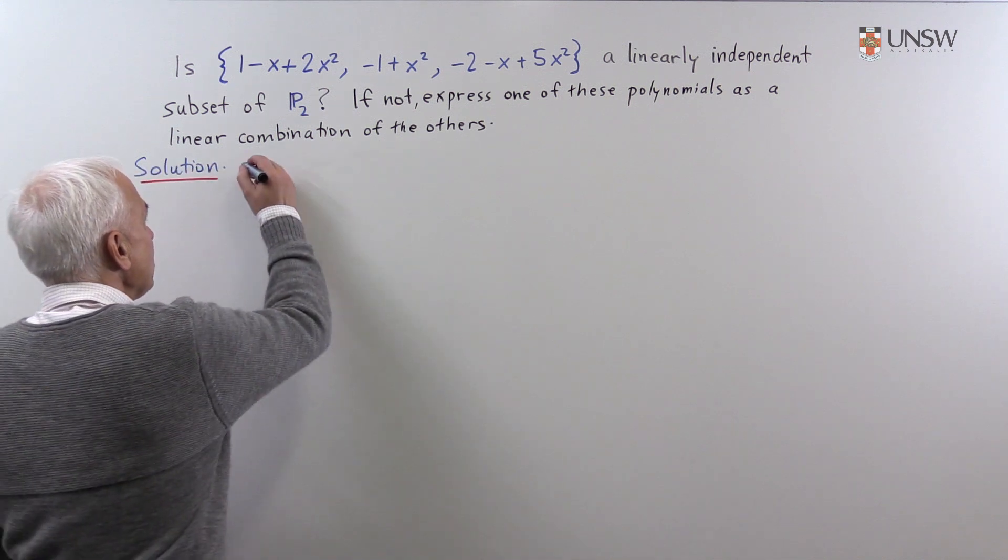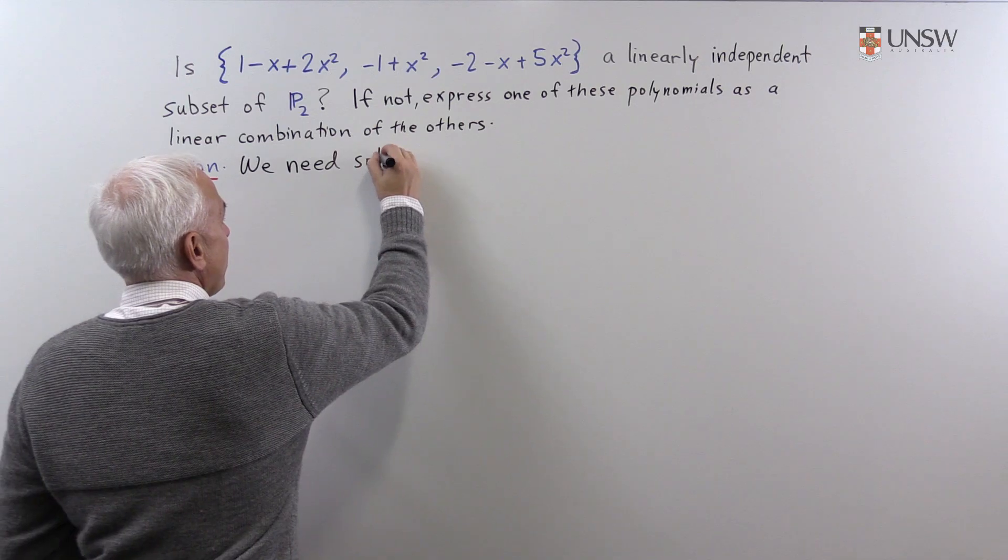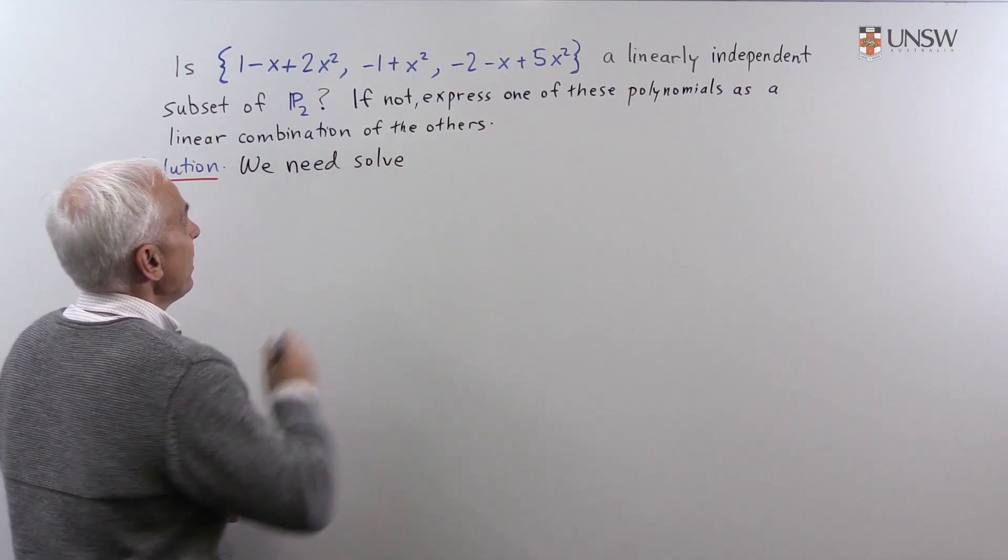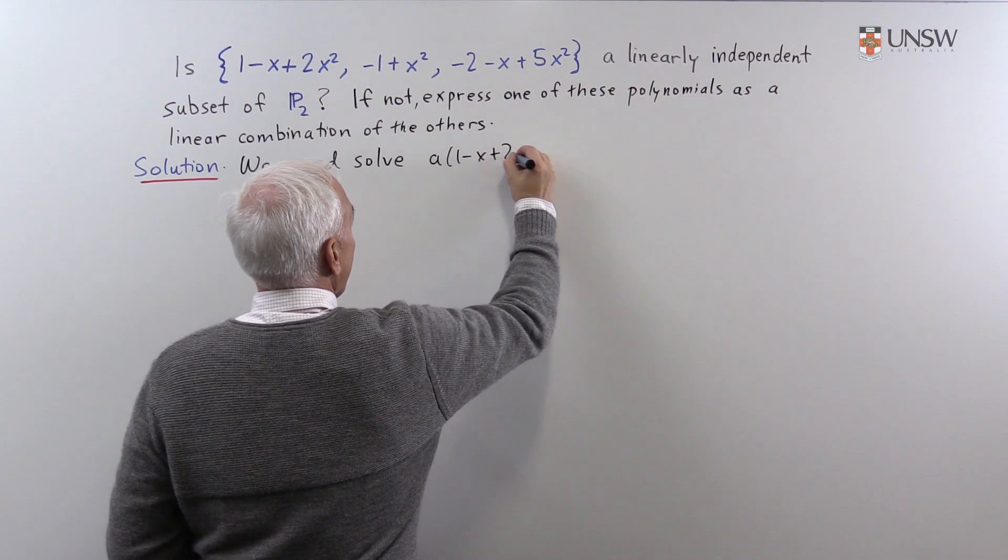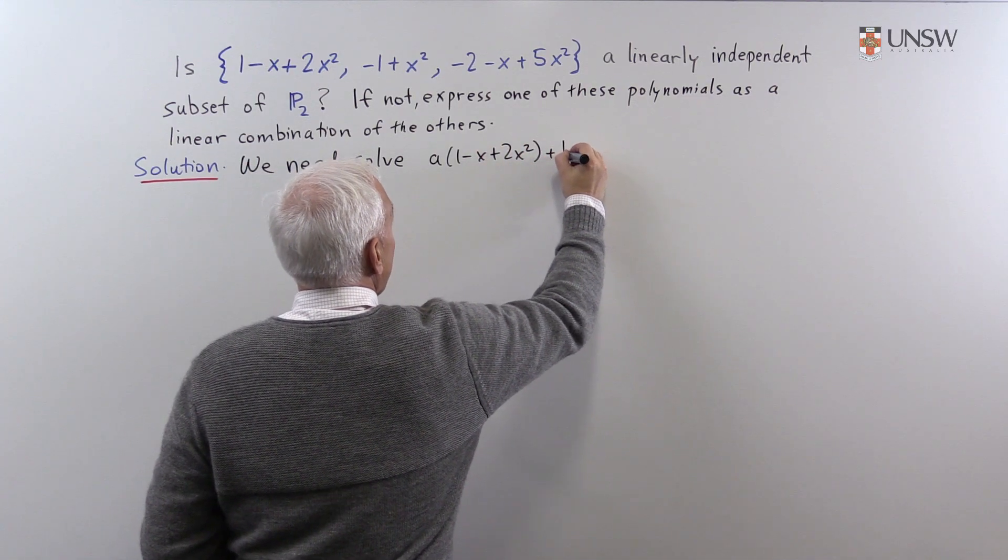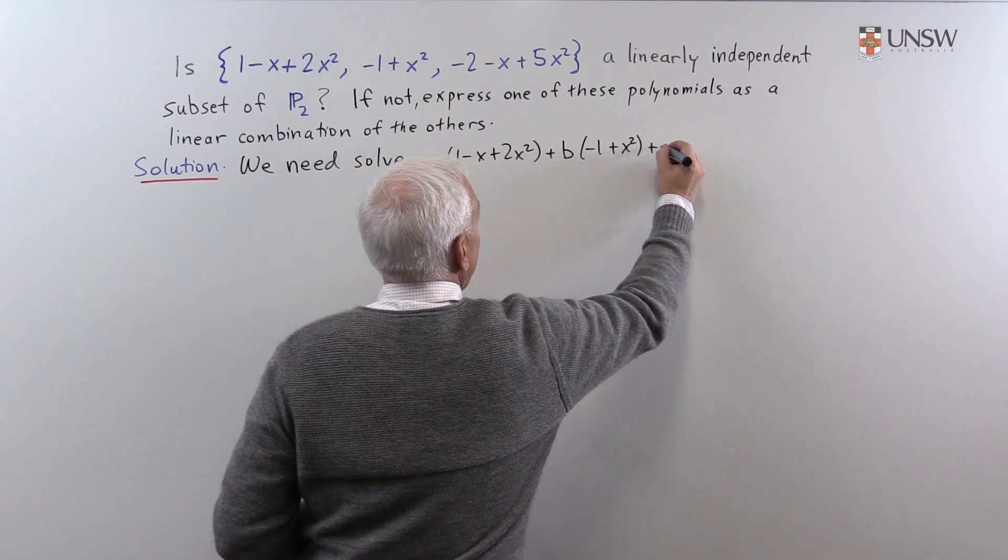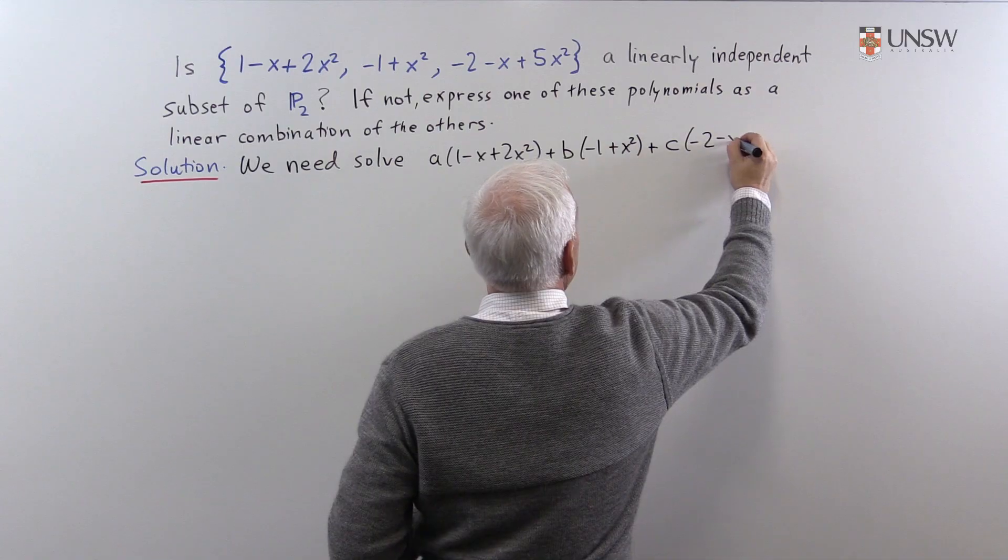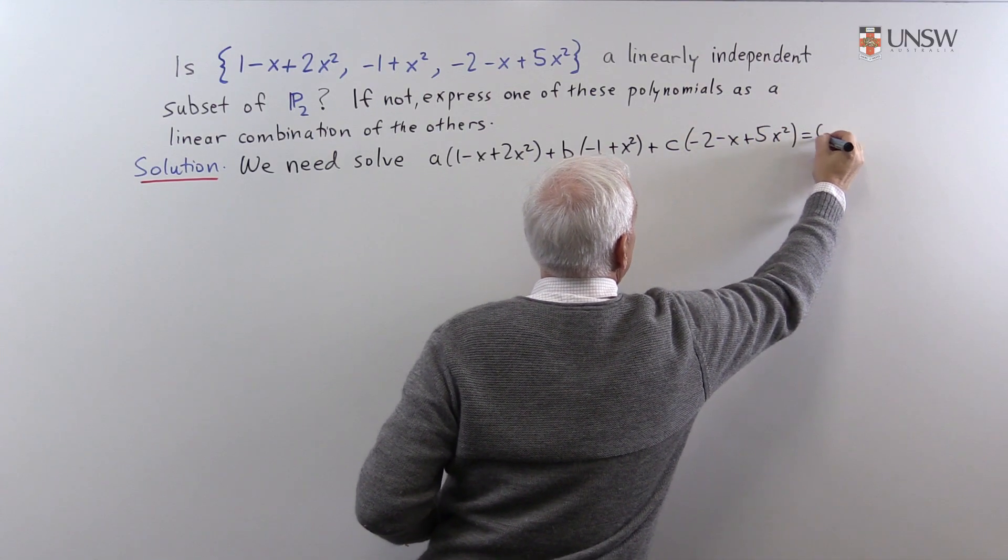So we need to solve the equation that says a times (1 - x + 2x²) plus b times (-1 + x²) plus c times (-2 - x + 5x²) equals 0.